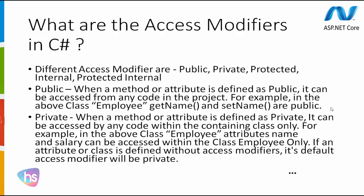When a method or attribute is defined as private, it can be accessed only by code within the containing class. For example, in the Employee class, attributes like name and salary can be accessed within the Employee class only. If an attribute or class is defined without access modifiers, its default access modifier will be private.